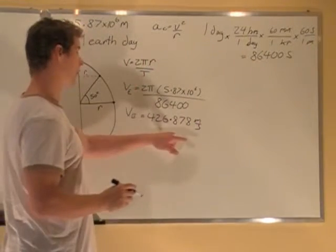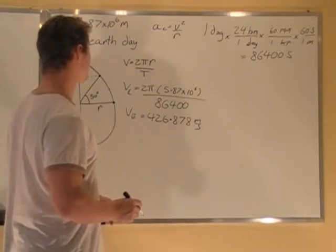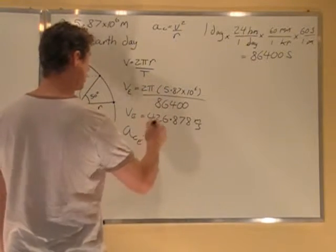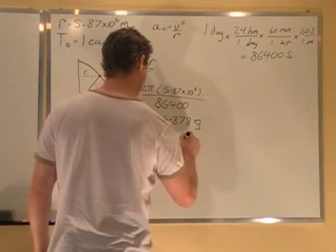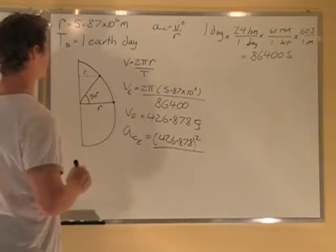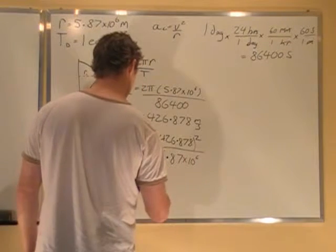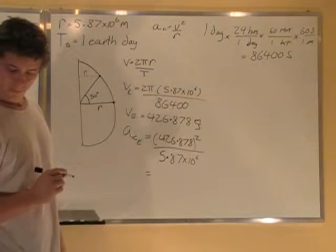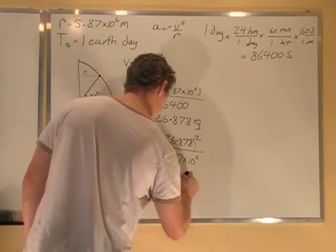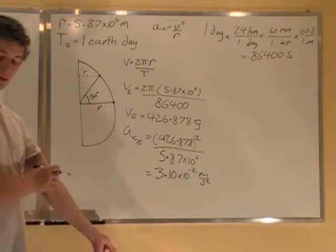And now, what I don't do here is I don't round off yet, because if you round off you're going to get errors in the end of your answer. You don't round off till the very end. So we'll use all these numbers in here. So the centripetal acceleration at the equator is equal to v squared over r. So v squared, 426.878 squared over r. My radius is 5.87 times 10 to the 6. It gives me a centripetal acceleration of 3.10 times 10 to the minus 2 meters per second squared. And that's for the centripetal acceleration at the equator.